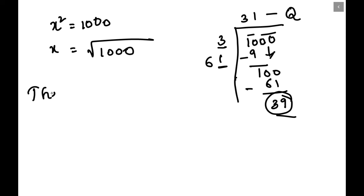So let me write this in statement form. The square of 31 is less than a thousand. So by this problem itself we can understand the square of 31 is less than a thousand.